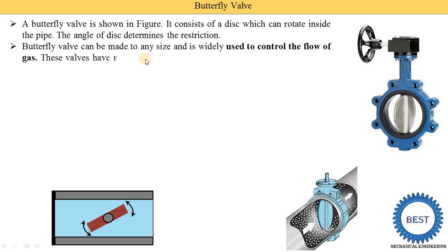Butterfly valve can be made to any size and is widely used to control the flow of gases. We can make it in a smaller size up to the larger size. Any size is possible and this butterfly valve is generally used for control the flow rate of the gas. This means it is not used for the liquid, but it is used for the gas.